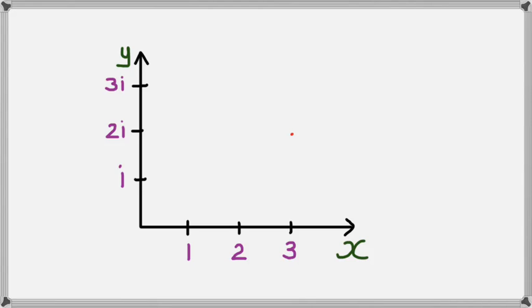So let's have a look at an example here. So what if I put, let's say I put a dot here, right there. This is 3 on the x-axis, and 2i on the y-axis. Therefore, this number, the way it's written is 3 plus 2i.